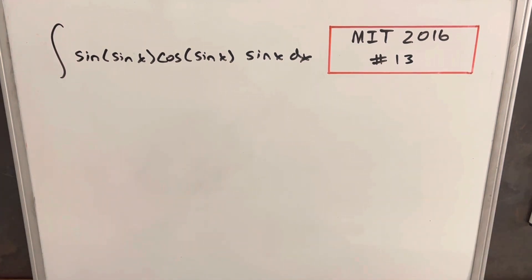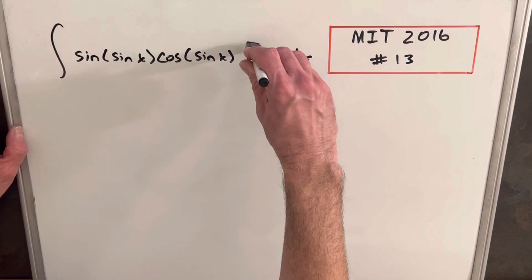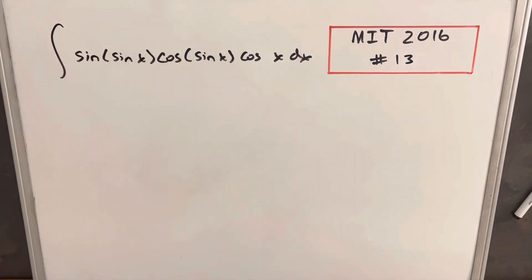So we have here the integral of sin(sin x)cos(sin x)sin x dx. Okay, clearly trying to create a confusing expression here. First thing I noticed is that I've copied the problem down wrong, so we're going to make a change. So yes, we have here on the board the integral of sin(sin x)cos(sin x)cos x dx.